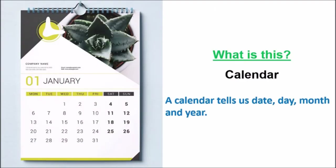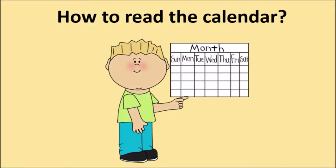What is this? This is a calendar. See the calendar. And children, a calendar tells us date, day, month and year. Today we will learn how to read the calendar. Are you ready? Okay, so let us begin.